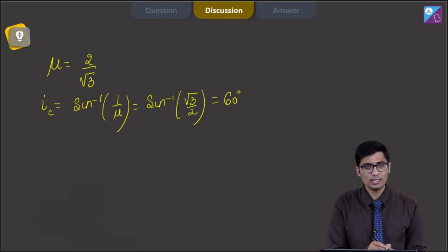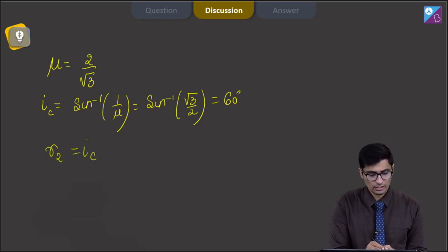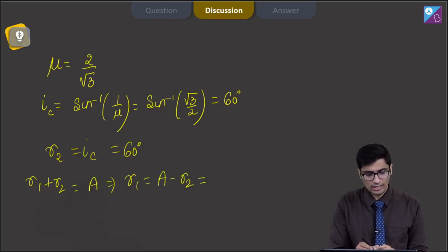Now, since the ray is emerging parallel to the opposite surface we can write down that R2 should be equal to this critical angle therefore, R2 is equal to 60 degree. For a prism we also know that R1 plus R2 is equal to A that means, R1 will be equal to A minus R2 and that will be equal to 90 minus 60 that is 30 degree.